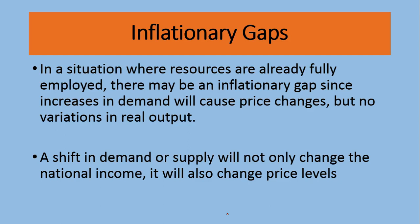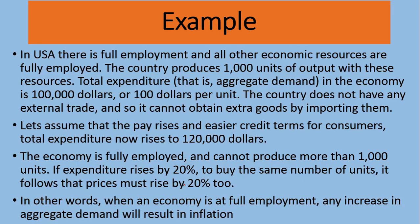This gap between total supply and total demand means aggregate supply is less than aggregate demand. This gap cannot be filled because we are already operating at full capacity level. Since there is no external trade — we are talking about a two-sector economy — prices will rise, and any shift in demand or supply will not only change the national income but also change the price level.